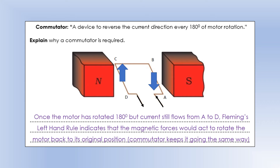Using Fleming's Left Hand Rule again: the field still goes north to south, but from A to B the current now goes into the page, so the force is downwards. From C to D the current comes out of the page, so the force is upwards. This means the motor tries to rotate back to where it was — not useful. By reversing the current, the commutator swaps those force directions and keeps the motor rotating the same way, ensuring it rotates in only one direction.